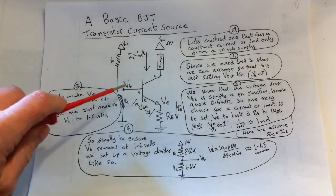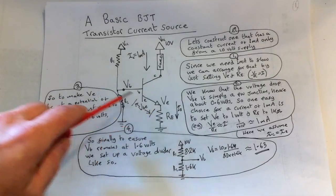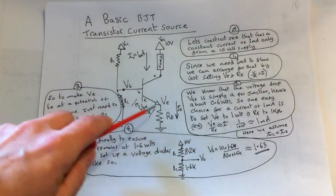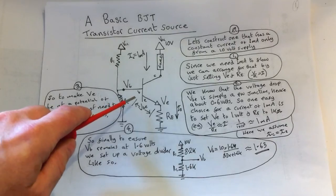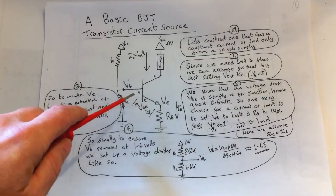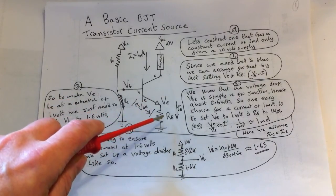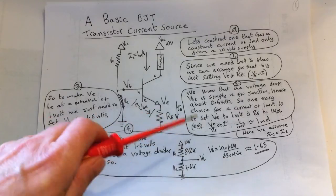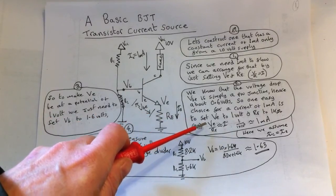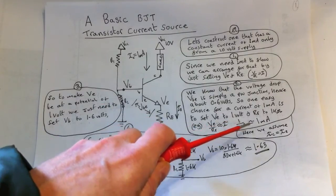We know that the voltage drop from the base to the emitter is just a simple PN junction drop, so that's 0.6 volts. Since we know that, it's an easy choice for a current of one milliamp to just set the emitter voltage to one volt and the emitter resistor to 1000 ohms, because if we divide one by 1000, we get the current we're after: one milliamp.